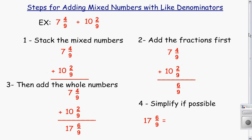Now, I'm going to bring that down to my next step. I bring my fraction down. I have 6/9 here, and then all I need to do is add the whole numbers. 7 plus 10 is 17. So I have my answer of 17 and 6/9.